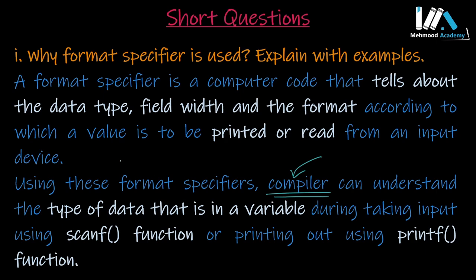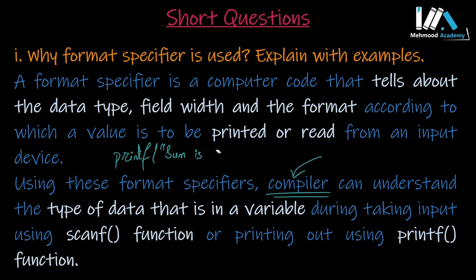When we write a printf statement — for example, 'the sum is' — we tell it whether the variable will be float or integer. In that case, we write %f for float or %d for integer. This tells the compiler what type of variable you are printing or scanning and reading.